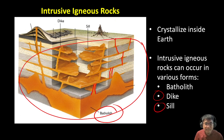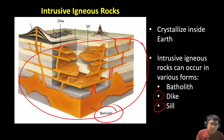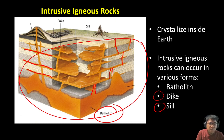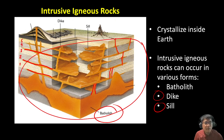The last one is a sill. Igneous sills are bodies of igneous rocks that are parallel to sedimentary layers. Here is a sill, and there's another sill right there, and another one there. These are called sills because, as you can see, these sedimentary layers are parallel to the sill bodies.